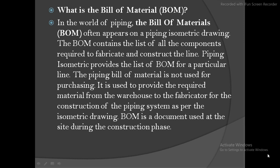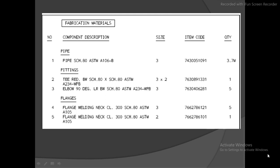The fabricator for construction of the piping system works from the isometric drawing. Whatever line is shown in the isometric, he will fabricate it exactly as shown. The fabrication person knows how to fabricate the product - he doesn't do design calculations. He just looks at the isometric, cuts accordingly, and follows the Bill of Material generated on the right-hand side of the isometric. The BOM is a document used at site during the construction phase.